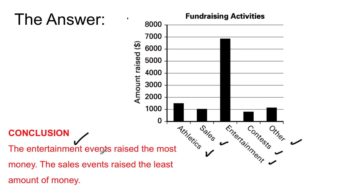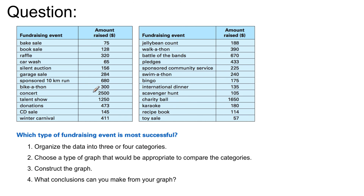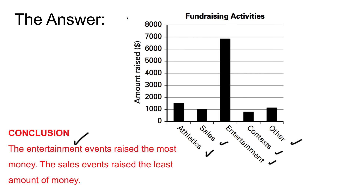The highest-grossing fundraiser was entertainment, close to $7,000, by a lot. Sales — bake sales, garage sales, whatever — made the least amount of money, and we can see that just by the graph. Basically, we took all that data, broke it down into five categories using a bar graph, and the conclusion is that most of the money came from entertainment. Maybe they got some big acts to come in — maybe Justin Bieber and his friends came in to do a show in a small town and raised a bunch of money.